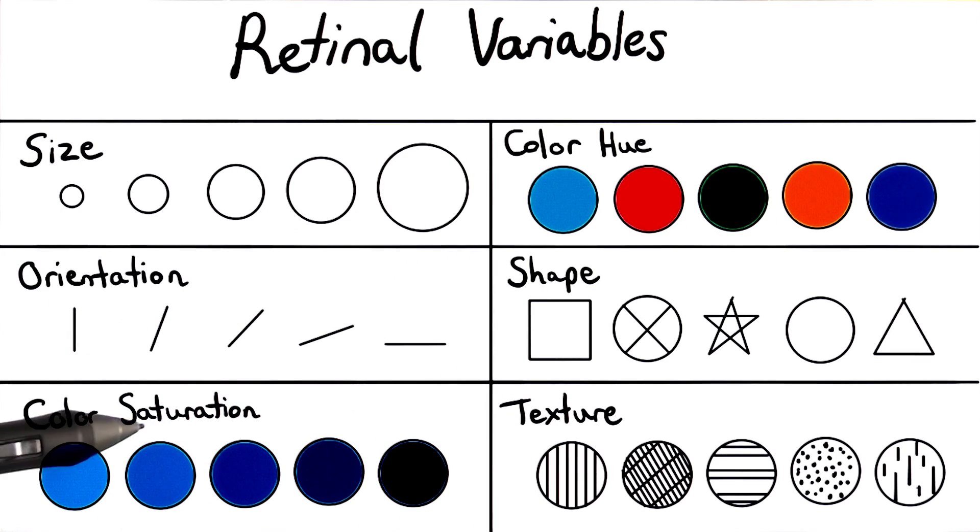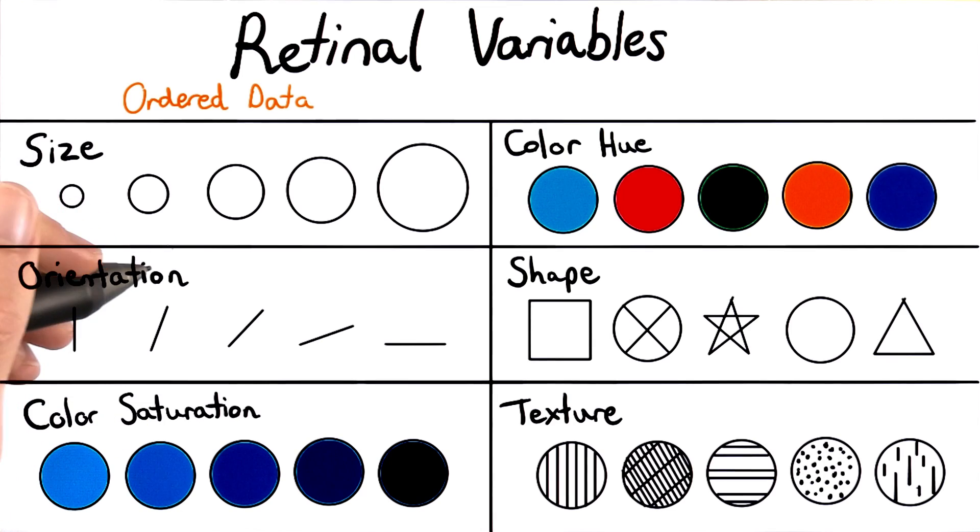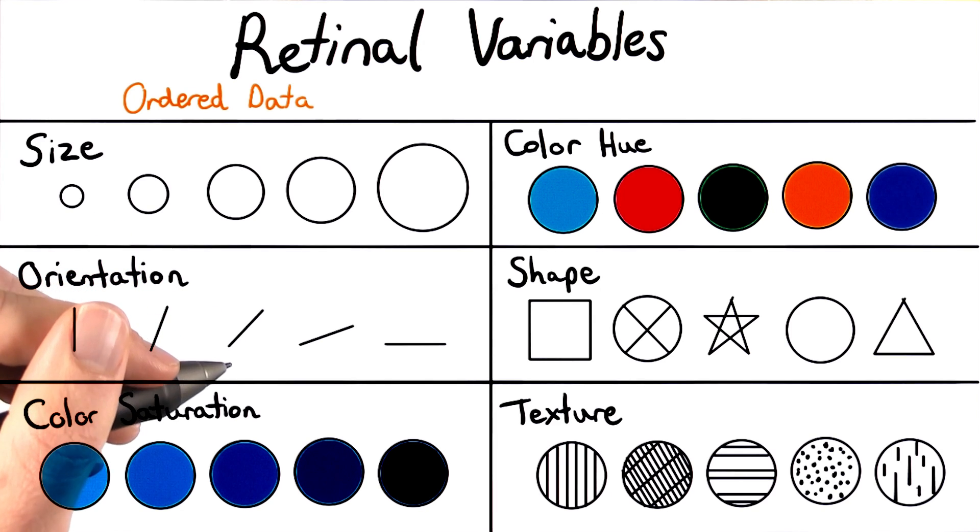Size, orientation, and color saturation are particularly effective for ordered data. However, it may be difficult to perceive quantitative differences using these visual encodings. The perceived value difference between, say, light blue and light light blue, isn't so obvious.